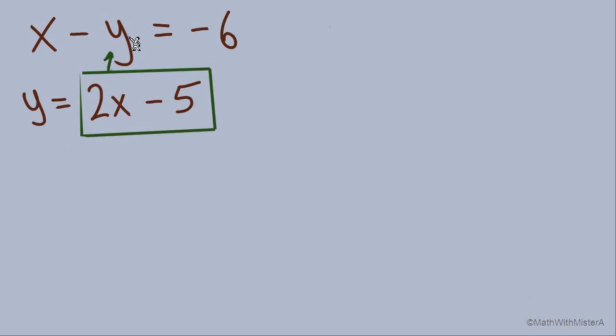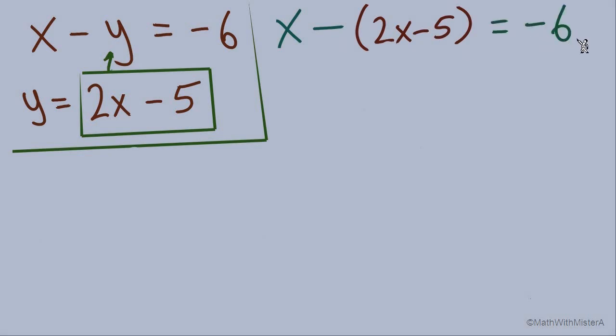Let's carefully rewrite the equation. It starts with x minus y. Now I'd always substitute in parentheses, so here it is: 2x minus 5 inside parentheses. It's key that we see a negative right here. Let's finish this equation: equals negative 6.